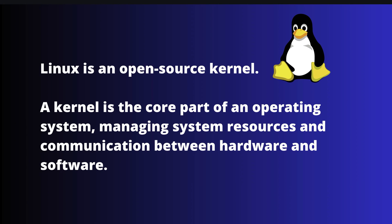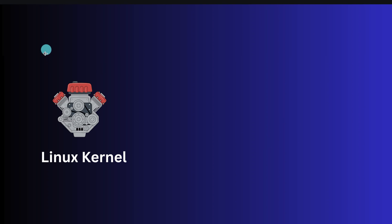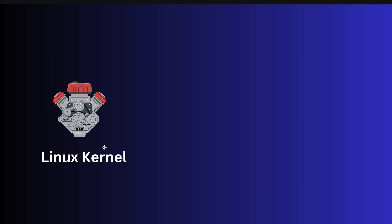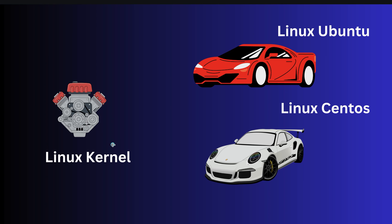To better understand the Linux kernel, think of it as the engine of a car. By itself it is powerful but not useful until you build a car around it. Since Linux is free and open source, different companies can use this engine to build their own version of a car, adding their own features, tools, look and feel, and giving them different names like Ubuntu and CentOS — which we call Linux distributions.